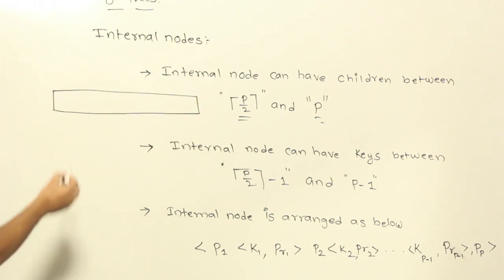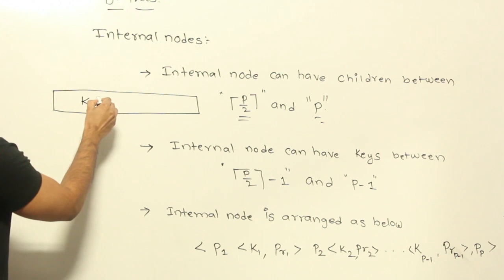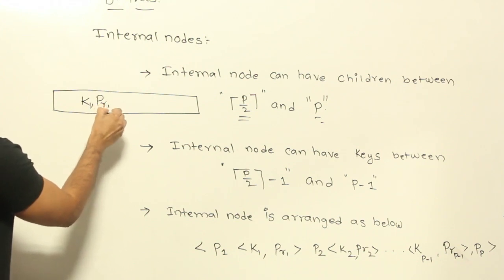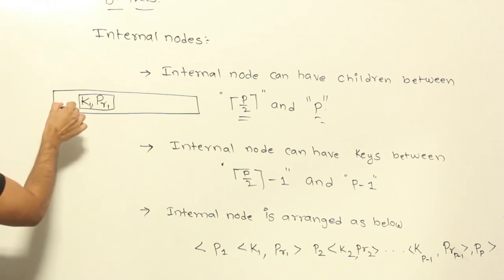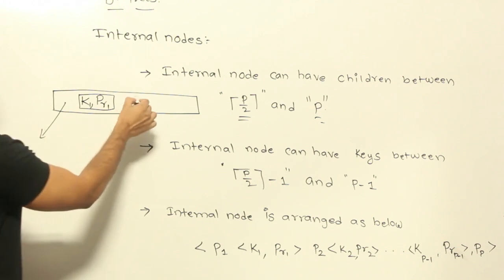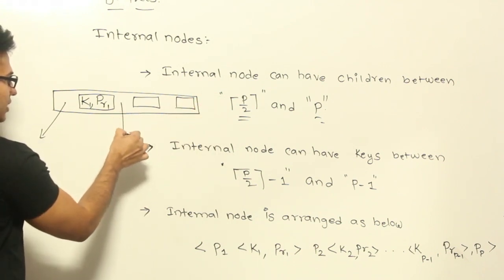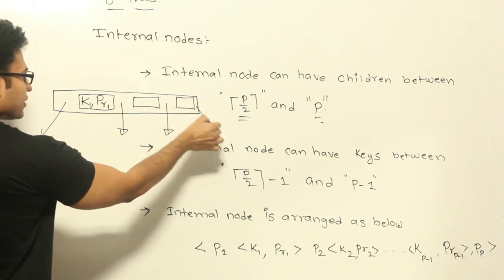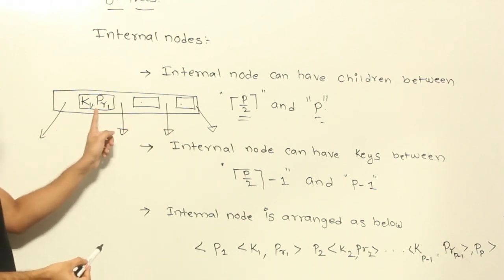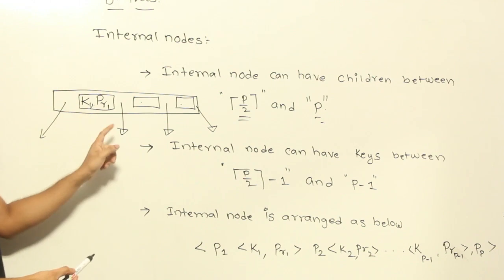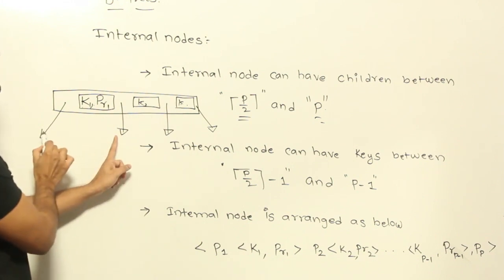Even the root node also looks something like this. You are going to have a key and then a pointer associated with it, and to the left of it there will be a pointer pointing to a child. And again there will be a key-value pair, like this, you are going to have key-value pairs. Between every key-value pair you are going to have a pointer to the children. The relation between the number of key-value pairs and the number of children is: the number of children is equal to number of key-value pairs plus 1. Therefore, the number of keys present will be number of children minus 1.